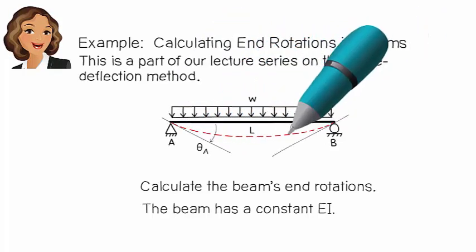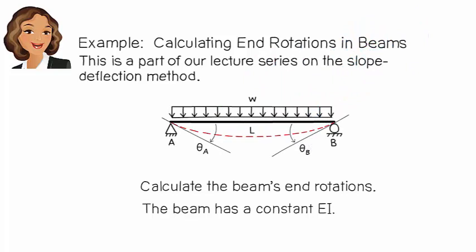So we have a clockwise rotation at A and a counter-clockwise rotation at B. Let's refer to these as theta A and theta B respectively.